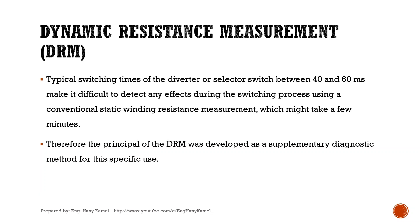Dynamic Resistance Measurement (DRM). Typical switching times of the diverter type or selector type OLTC switch between 40 and 60 milliseconds. This makes it difficult to detect any effects during the switching process using a conventional static winding resistance measurement, which might take a few minutes. Therefore, the principle of the DRM was developed as a supplementary diagnostic method for this specific use.